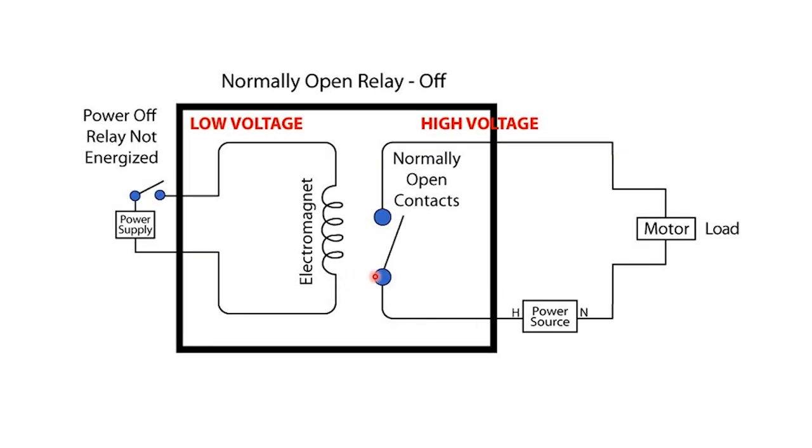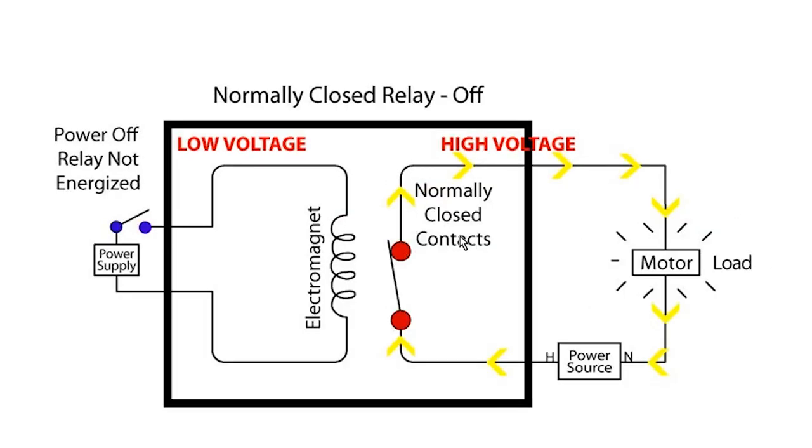Now let's talk about a normally closed contact. With a normally closed relay, as you can see with no power applied to the coil, we have power running through the contact side of the relay.